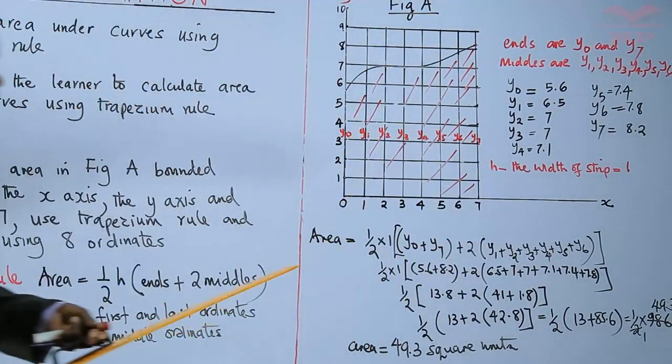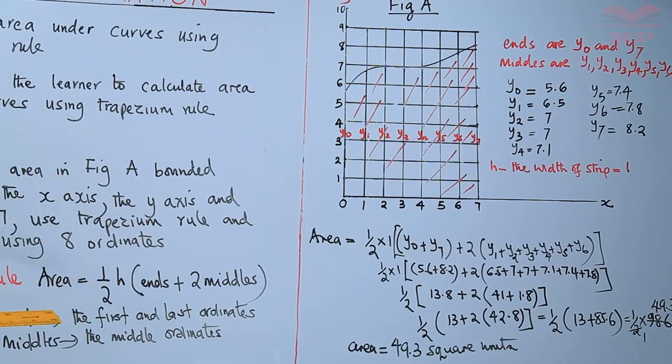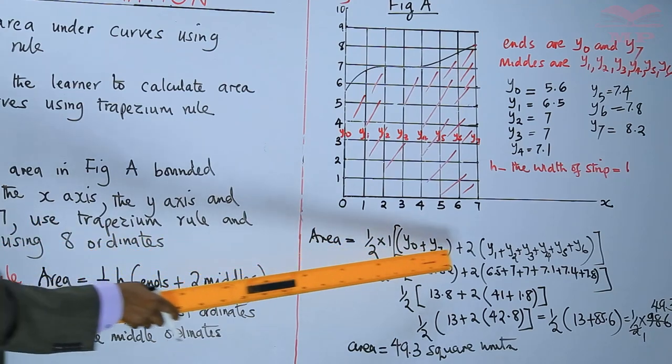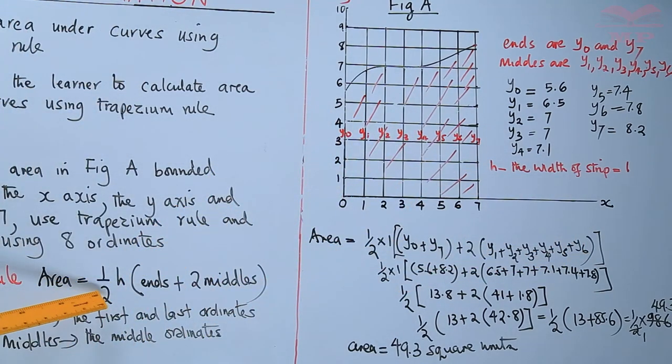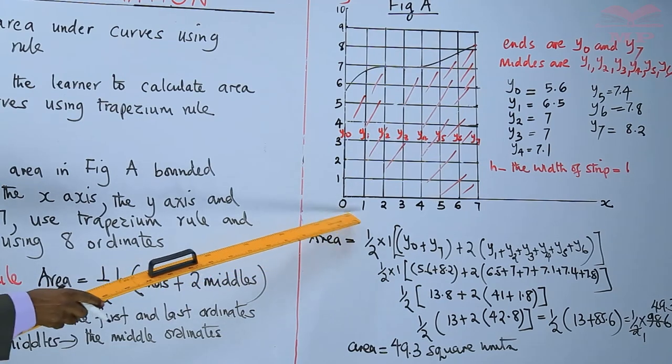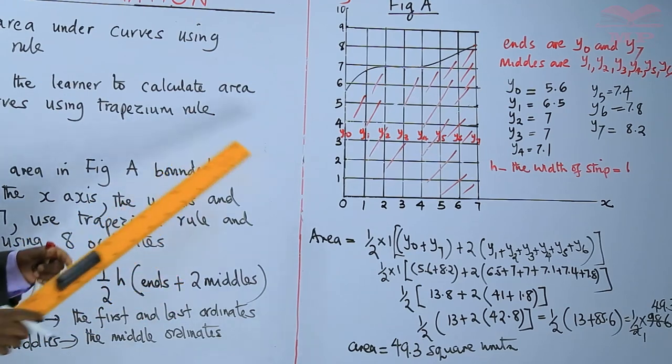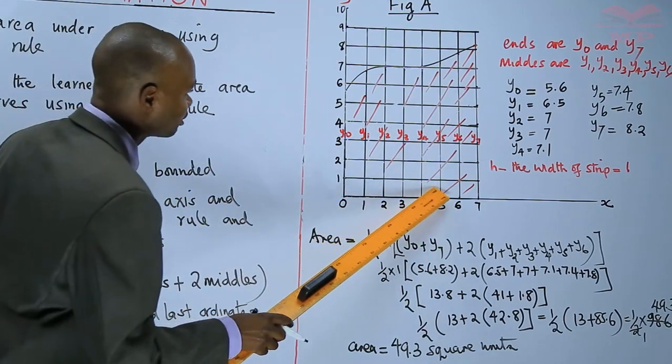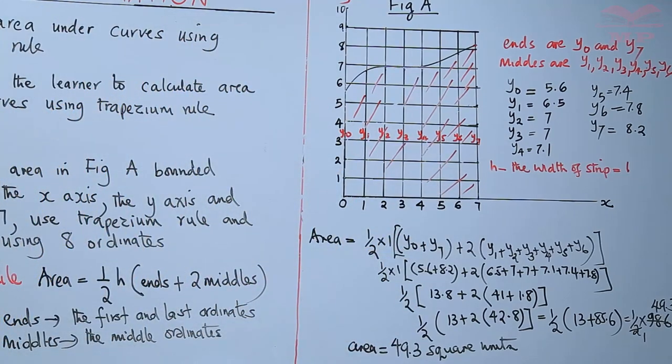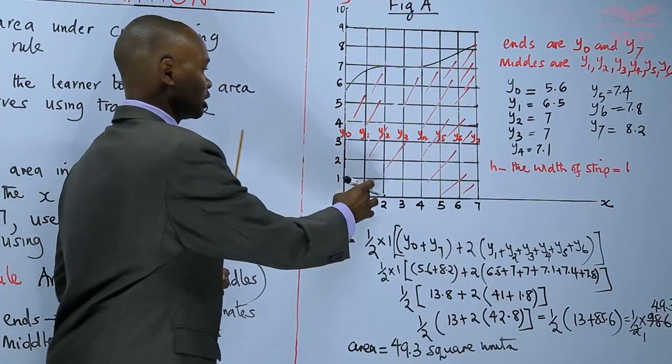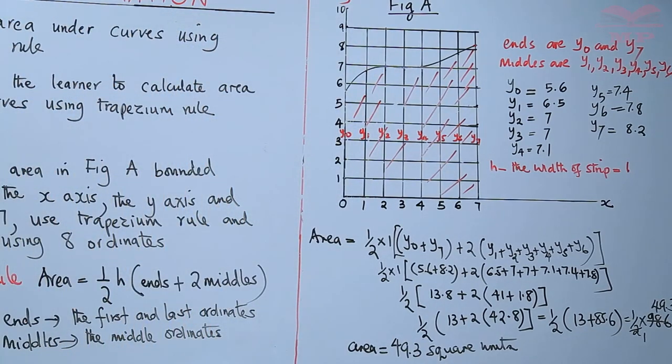That is how you work out. This is the simplified formula. Instead of writing all these, you just say a half times the width of the strip, which is 1, plus ends. Ends is the first and the last ordinate. The middles are here. 1, 2, 3, 4, 5, 6. We had 6 middles. Look at how we went through that, the measurements, the first and last ordinate, the middle ordinates. This refers to the ordinates.